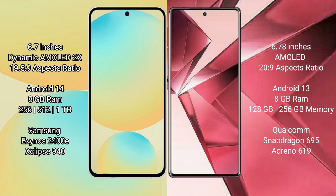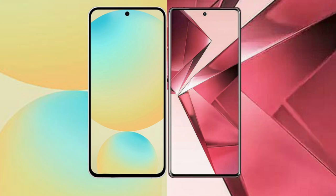The Samsung Galaxy S24 FE features the Exynos 2400E processor with 8GB RAM. VOV29E comes with 8GB RAM and 256GB internal storage, powered by the Qualcomm Snapdragon 695 processor.